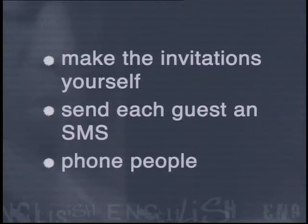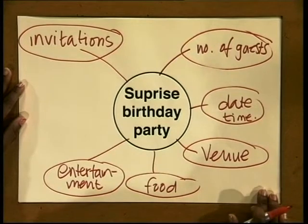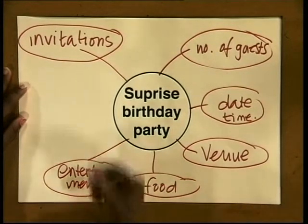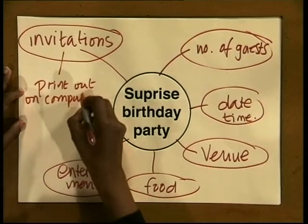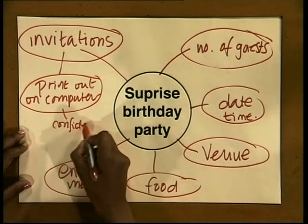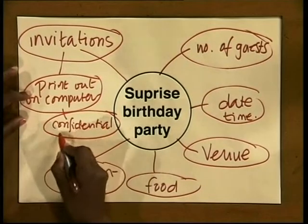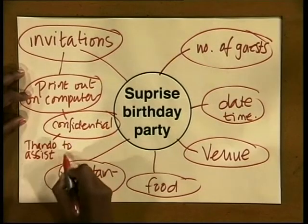You could make the invitations yourself, send each guest an SMS, or phone people. Once you've thought about an option that will best suit your type of party and your budget, fill it in on the mind map. Add to your mind map the details of the invitations. For example, we're going to print them out on computer, then we'll stick confidential labels on, and lastly we'll get Tando to assist with delivery.